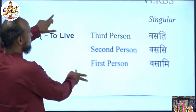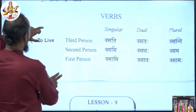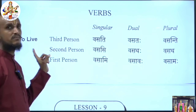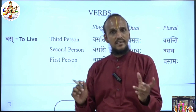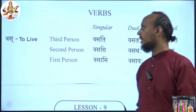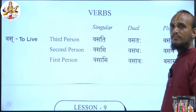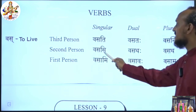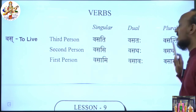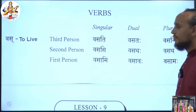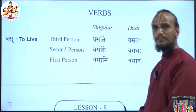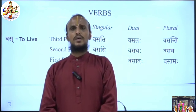Now I will teach you some verbs. 'Vas Dhatu' — the meaning of Vas Dhatu is 'to live'. Lat Lakara means present tense. The conjugation is: Vasati, Vastaha, Vasanti; Vasasi, Vasthaha, Vastha; Vasami, Vasavaha, Vasamaha. Did you enjoy this lesson, children?